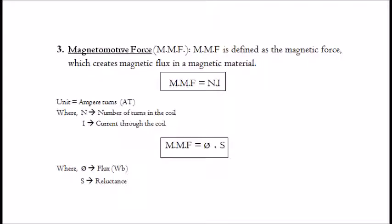3. Magnetomotive force, MMF. MMF is defined as the magnetic force which creates magnetic flux in a magnetic material. It is given by: MMF equals N multiplied by I. The unit of MMF is ampere-turns, where N is the number of turns in the coil and I is the current through the coil. Another equation of MMF is: MMF equals φ multiplied by S, where φ is the flux in Webers and S is the reluctance.